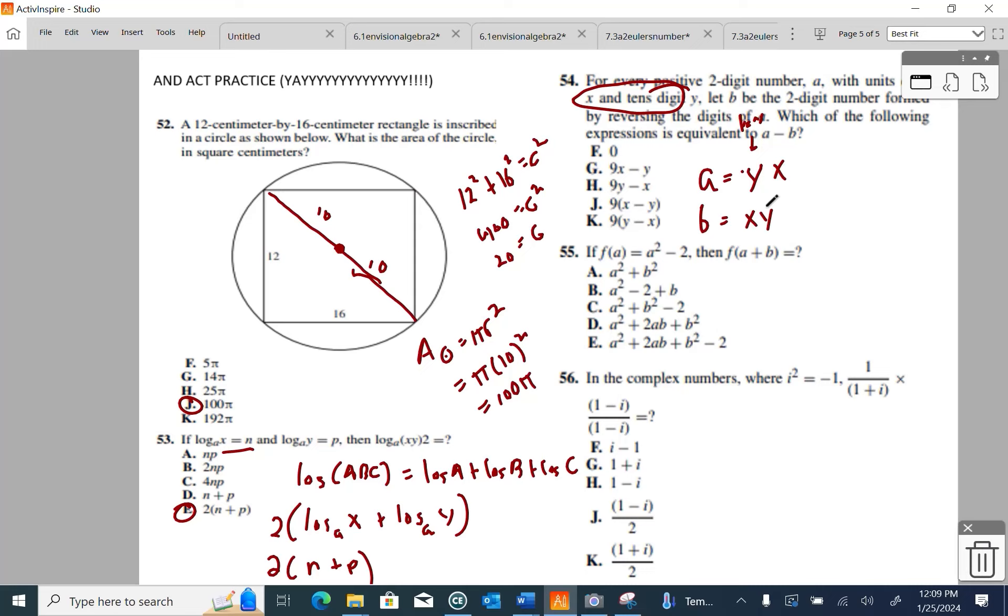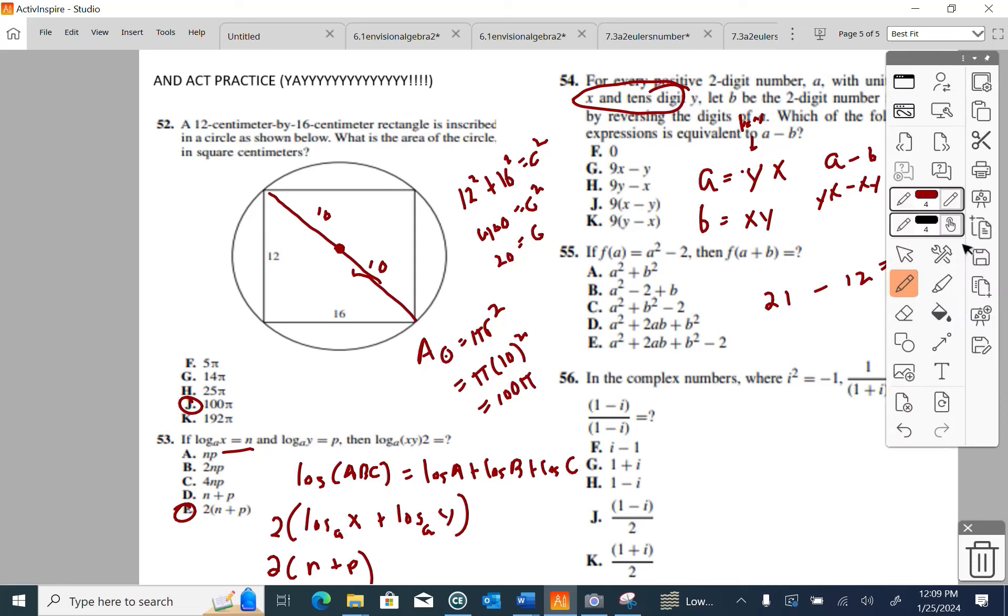But if we're doing A minus B, we're doing YX minus XY. Which doesn't make sense, does it? If I had something like 21, the reverse of that would be 12. And 21 minus 12 is 9. So my initial thought process on this one was messed up. Like I said, I remember doing this problem in the past, and I didn't like it then, and I probably still don't like it now.